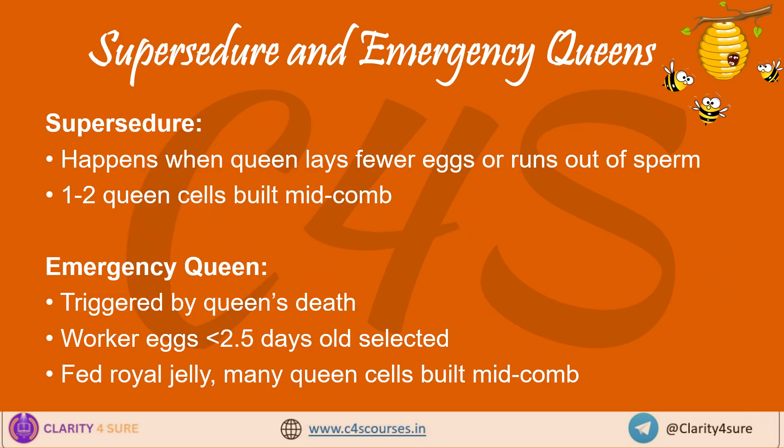Now let's see another important phenomenon in bee society: supersedure and emergency queens. Supersedure is a phenomenon where if the old queen becomes weak or runs out of sperm, the colony makes a new queen to replace her — this is called supersedure. But if the queen dies suddenly, worker bees quickly pick up young eggs less than 2.5 days old and feed them royal jelly to create an emergency queen. Many queens may develop, but the first to emerge usually becomes the new queen.